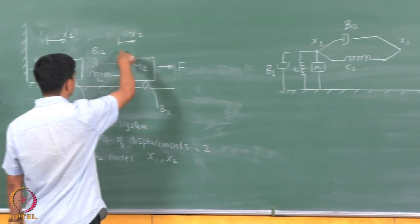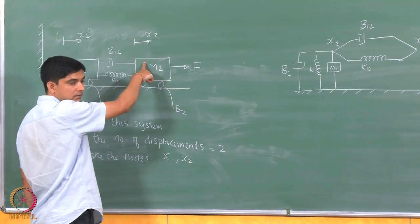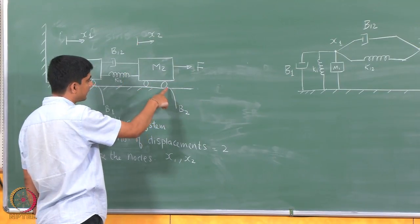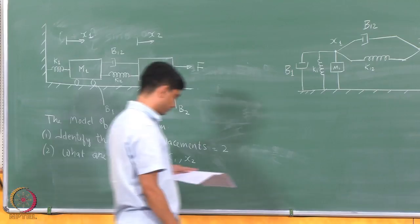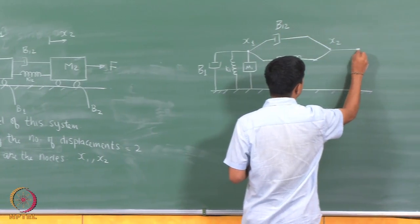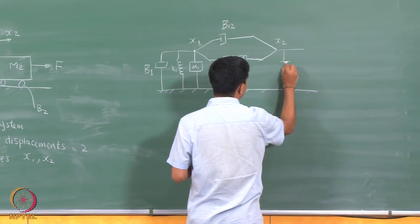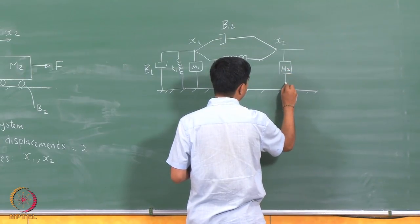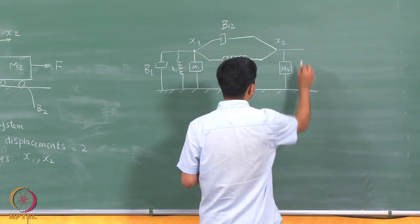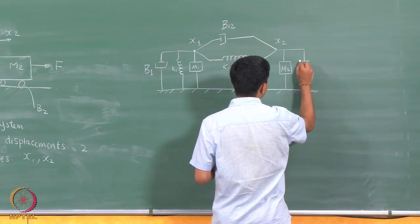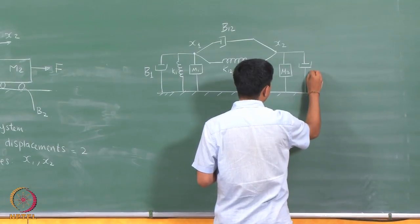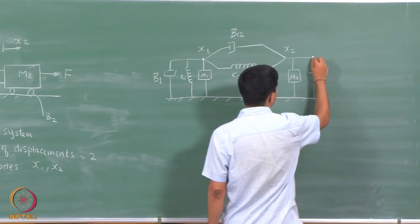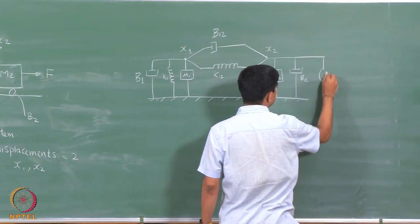Going to node 2: there is a mass m2 between node 2 and the reference, and similarly a damping element b2. There is also a force being applied at node 2.